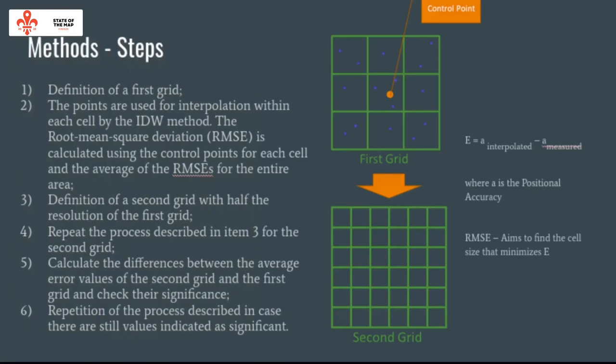The methods are described in two steps. Step one: definition of a first grid where points are used for interpolation within each cell by the IDW method. Step two: the root mean square deviation is calculated using the control points from each cell, and the average of this deviation for the entire area is computed.